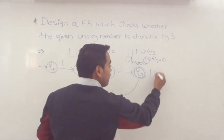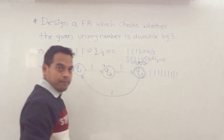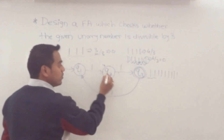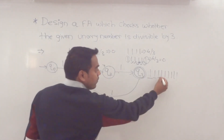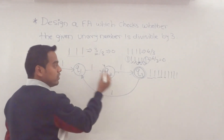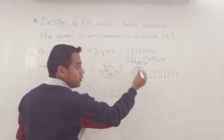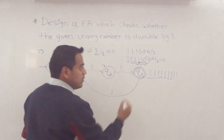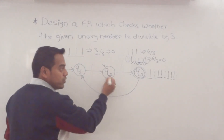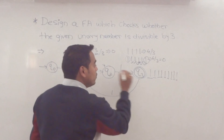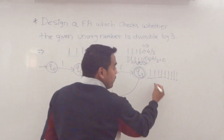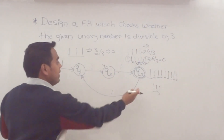Suppose 9 ones come: 1st→q0 to q1, 2nd→q1 to q2, 3rd→q2 to q3, 4th→q3 to q1, 5th→q1 to q2, 6th→q2 to q3, 7th→q3 to q1, 8th→q1 to q2, 9th→q2 to q3 — it reaches the final state. So for any multiple of 3, it is accepted by this particular finite automaton.